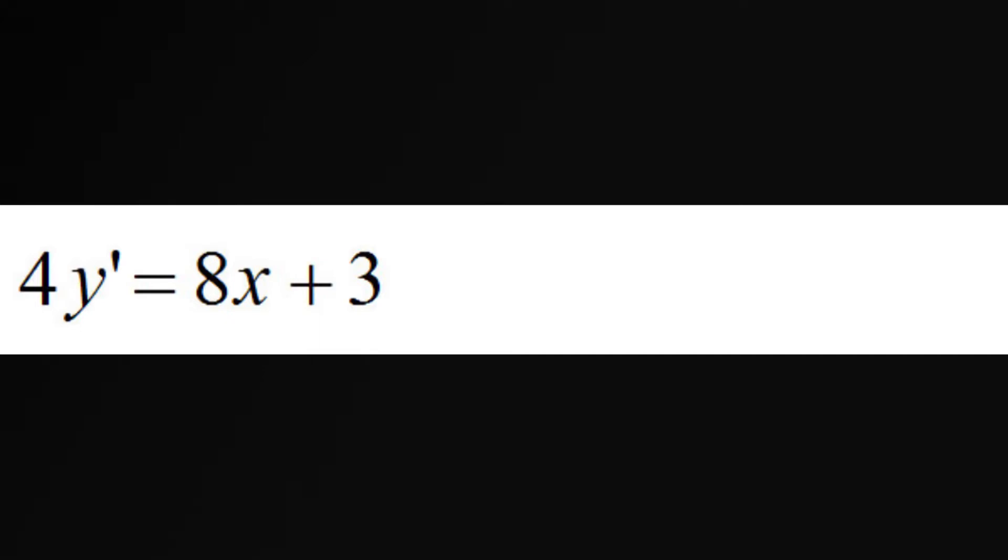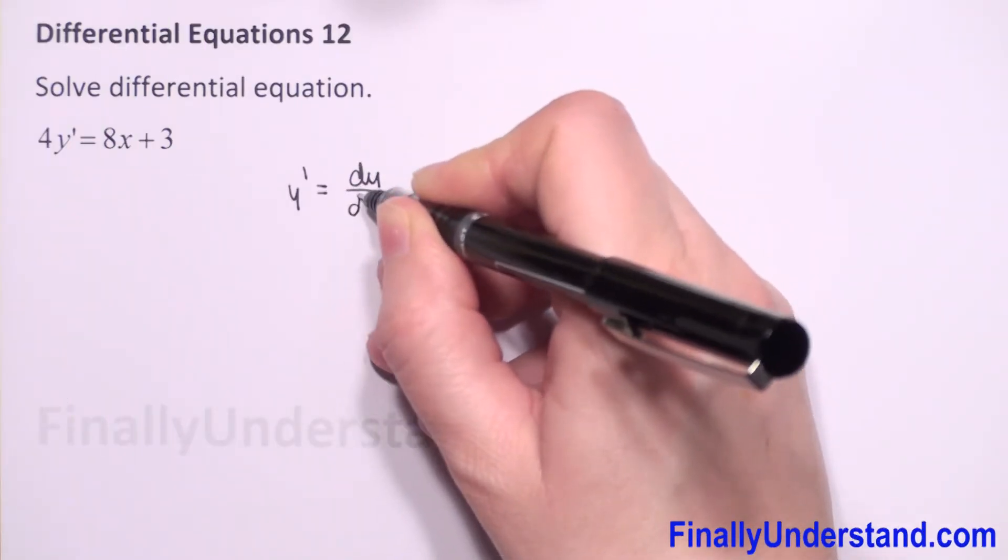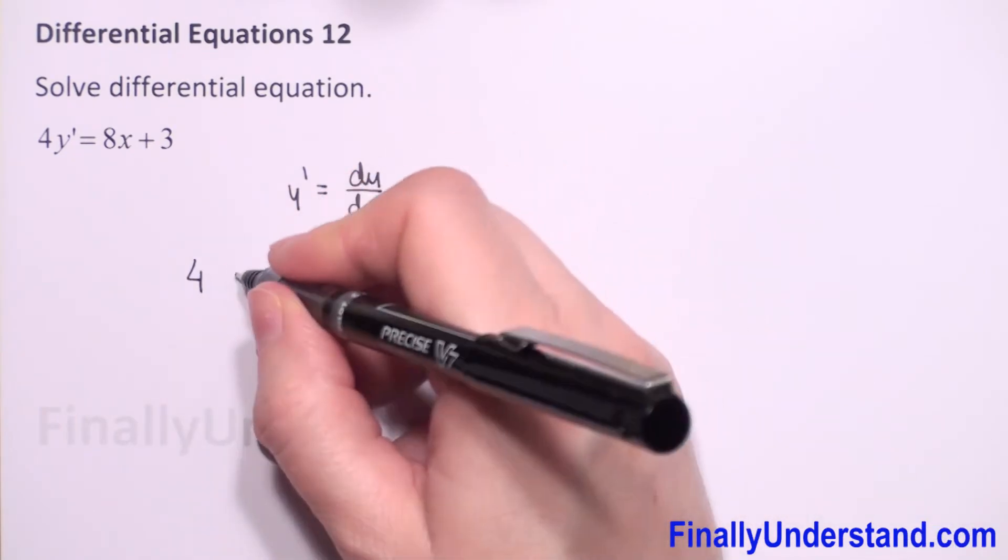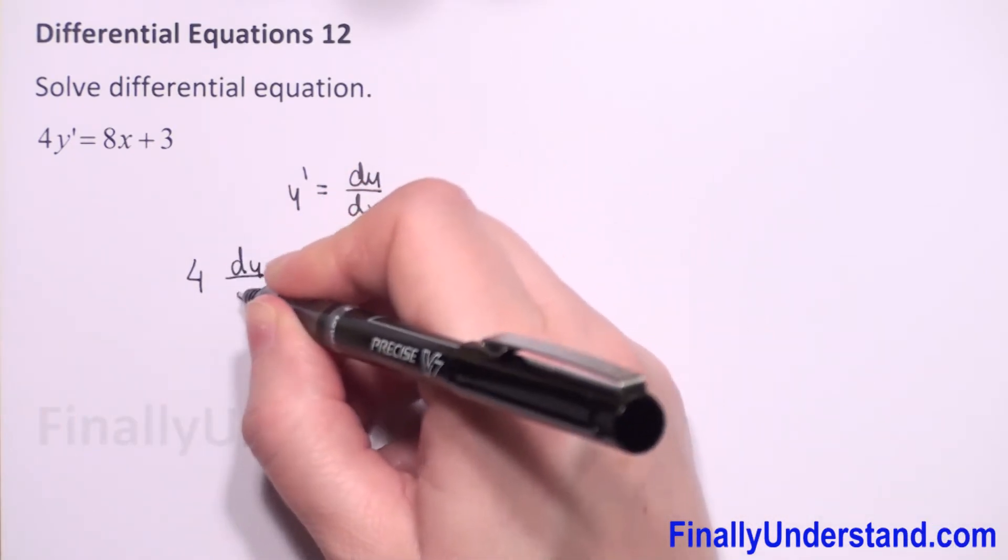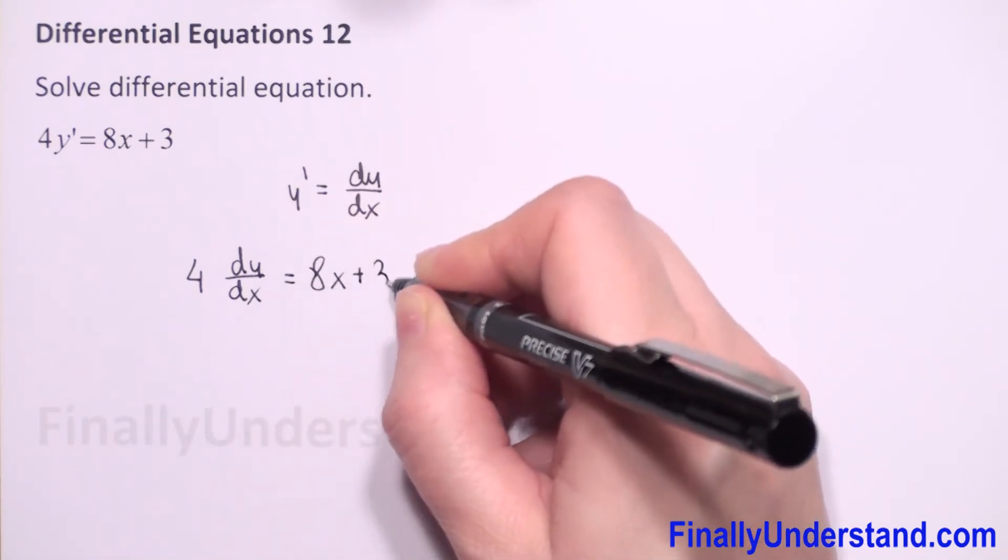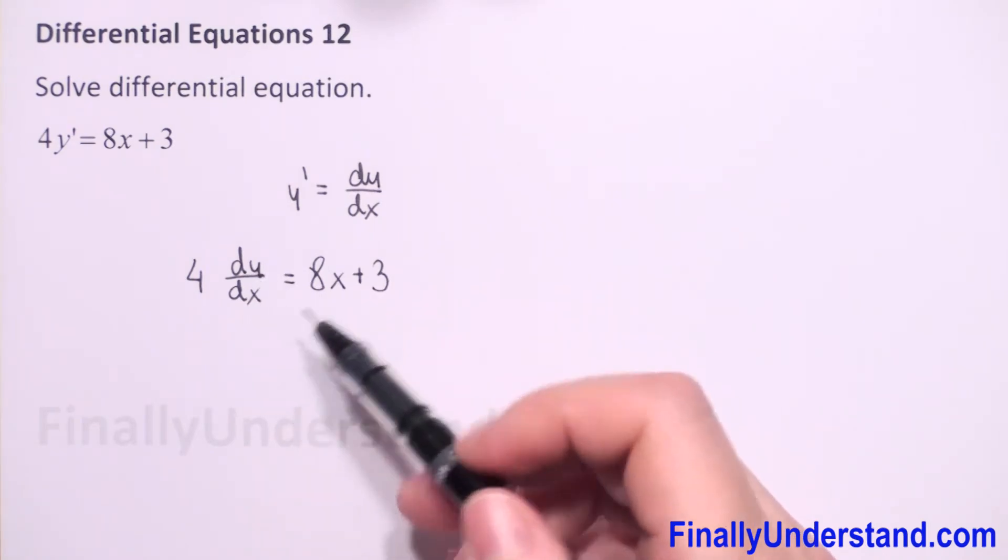We have a differential equation. First I will replace y prime by dy over dx, so we will have 4 times dy over dx is equal to 8x plus 3.